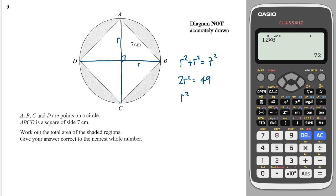So r² is equal to 49 over 2, so r is equal to the square root of 49 over 2, so we can go to our calculator and we can do the square root of 49 over 2, and we get 4.95.